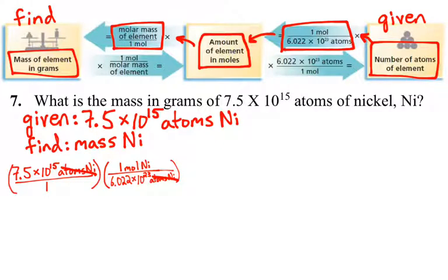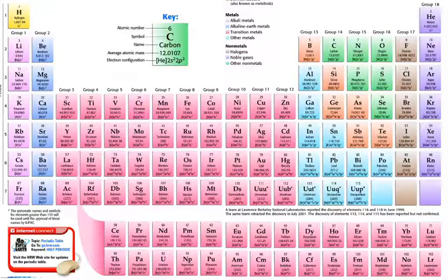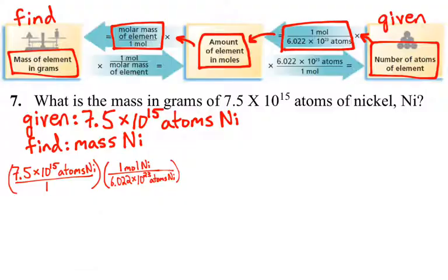Now, to find the molar mass of an element, we refer to the periodic table and look at the average atomic mass of that element, and that is numerically equivalent to the molar mass of our element. So, we'll look at the periodic table, and we find our element nickel, and we see that nickel has an average atomic mass of 58.6934 AMUs. Well, that number is numerically equivalent to the molar mass of nickel, which would make our molar mass 58.6934 grams of nickel per one mole of nickel. So, we're going to then take that number and go back to our problem, and we will now write in the molar mass of nickel that we just found from the periodic table into our problem.